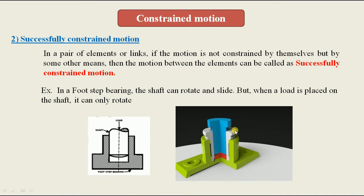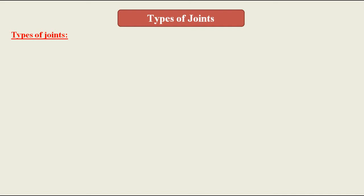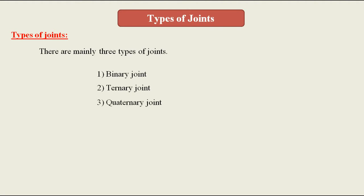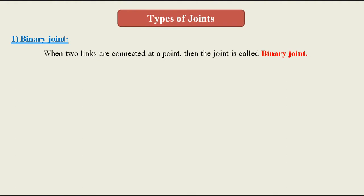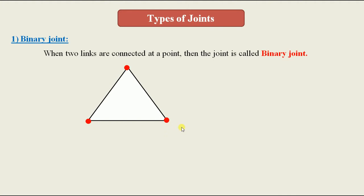Next are the types of joints. There are mainly three types: binary joint, ternary joint, and quaternary joint. A binary joint is formed when two links are connected at a point. For example, three links arranged in a triangular form have three binary joints total.